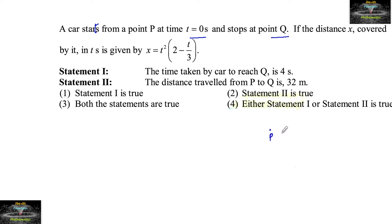So a car is moving from point P to Q at t equals 0 seconds, which means rest position, and at point Q it stops. The distance traveled by it is given as x equals t squared times 2 minus t upon 3.